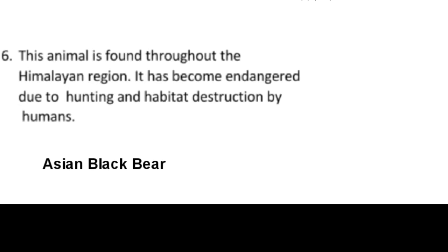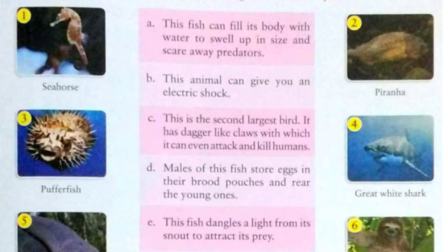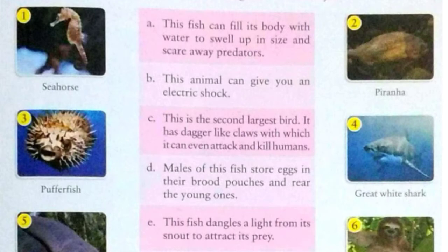Now exercise number 11: Amazing Animals. In this exercise we will learn about some amazing features of animals and match them to pictures. Question A: this fish can fill its body with water to swell up in size and scare away predators. It is the puffer fish — also called blowfish — named for their ability to inflate themselves to several times their normal size by swallowing water or air when threatened. The answer for A is option 3.